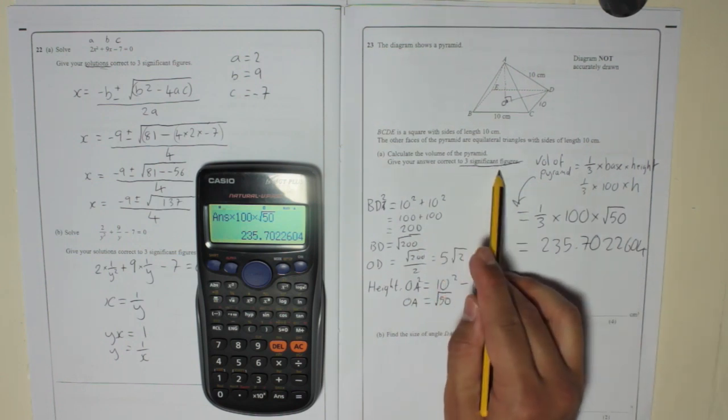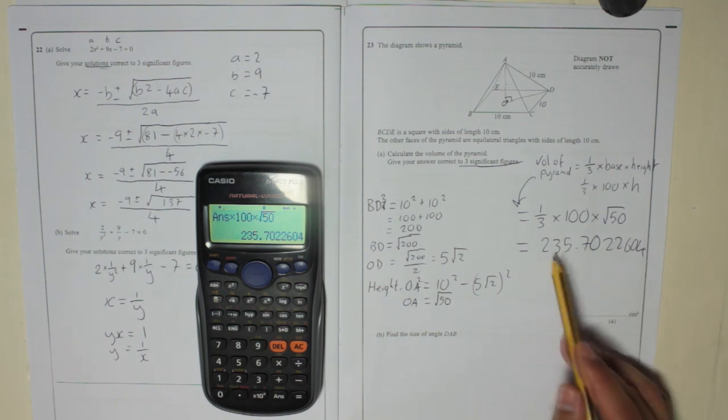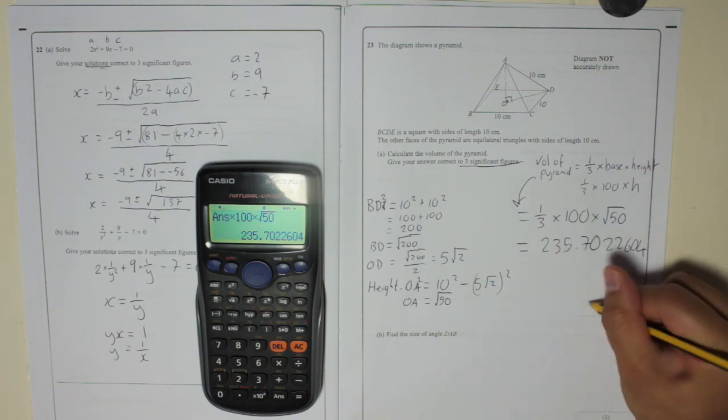Round that, remember, to 3 significant figures. 1, 2, 3. So the 7 is big, so 5 goes up 1, 2, 6. 236. Remember, the other way of looking at it is that the third significant figure is the units column, so we're going to round it to the nearest unit, the nearest whole number, which is 236.